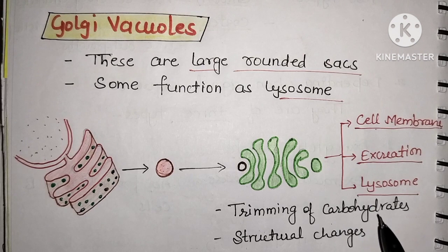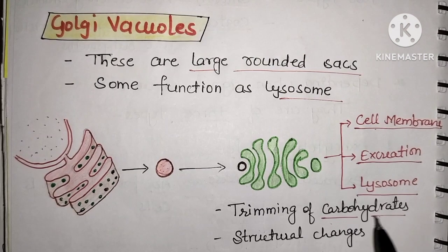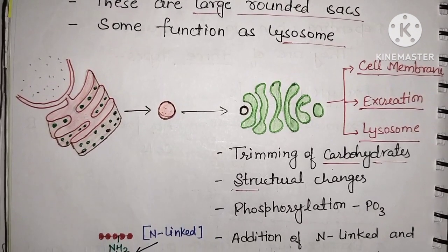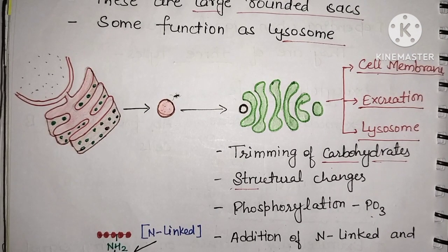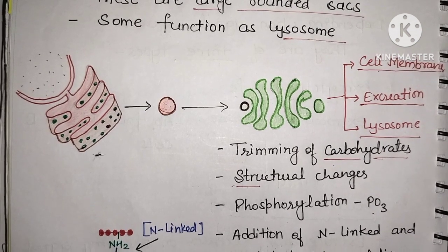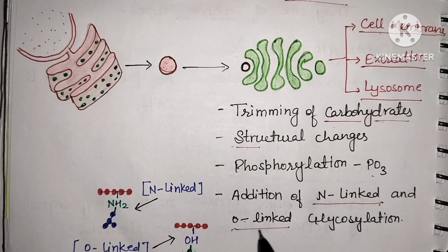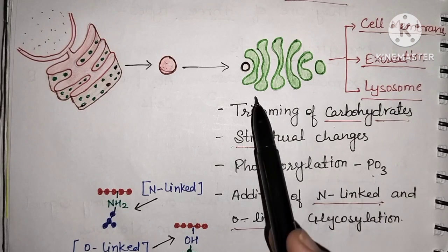Inside the Golgi apparatus, various modifications occur. Carbohydrates can be attached to proteins, forming glycoproteins. The Golgi apparatus can also remove carbohydrates, make structural changes, perform phosphorylation by attaching a phosphate group, and perform glycosylation via N-linkage or O-linkage. All these modifications take place inside the Golgi apparatus.